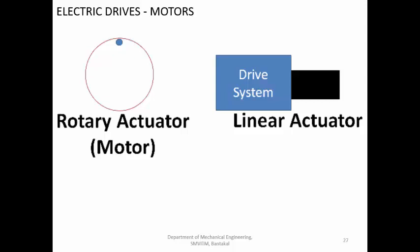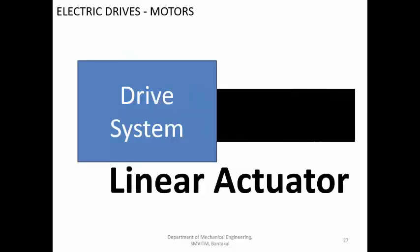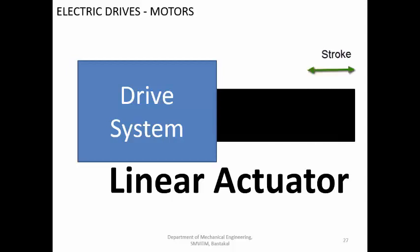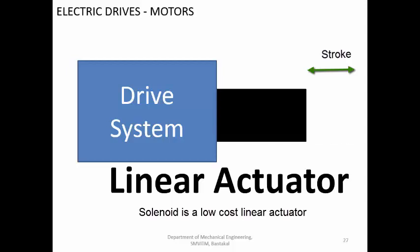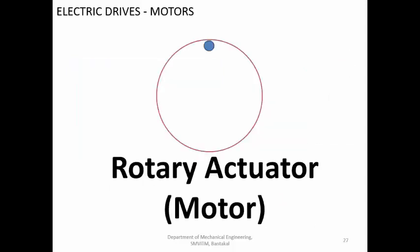Next one is electric drives. There are two types: one is linear actuator, and the other is rotary actuator. When the stroke length is very large, linear electric drives are not possible. For a very short stroke length, you can have a linear actuator at low cost. For higher cost, you have something called a linear motor which can generate a very large amount of force. But for continuous rotary movement, you have electric actuators called motors.